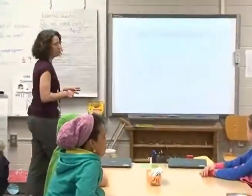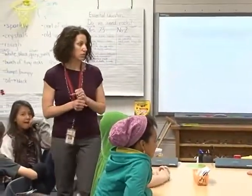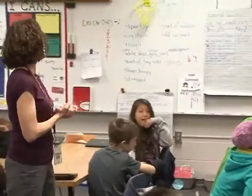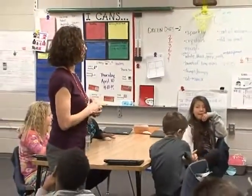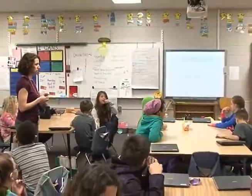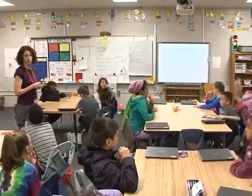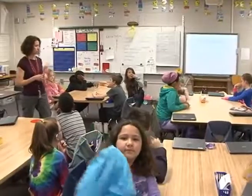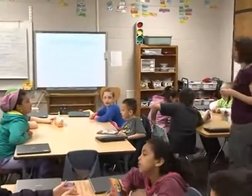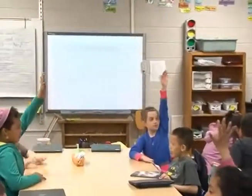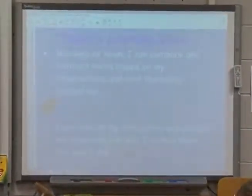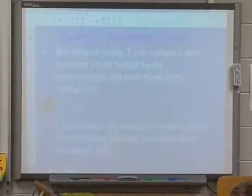Our goal today is to keep up with our observation skills, because to do this task you're going to have to be a good observer. You're going to work as a team. The goal says: working as a team, I can compare and contrast rocks based on my observations and sort them into categories. 'Categories' is just a big word that means groups — so you're going to categorize and sort them into different groups.